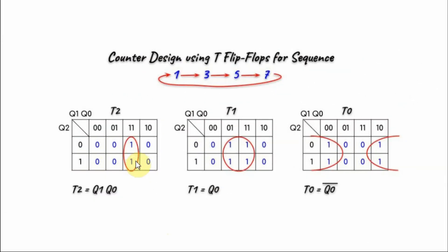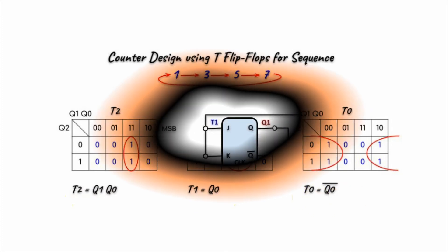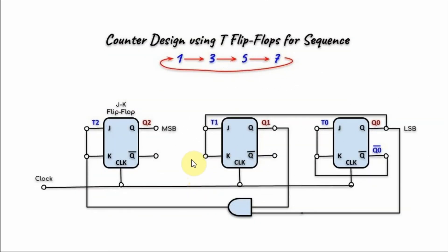These are the Karnaugh maps for T2, T1, and T0. By applying the simplifications, we can derive the Boolean expressions for T2, T1, and T0. This is the block diagram of the implemented sequence counter.